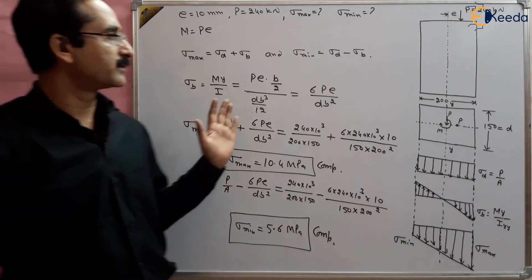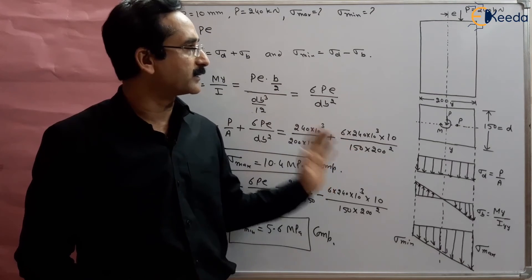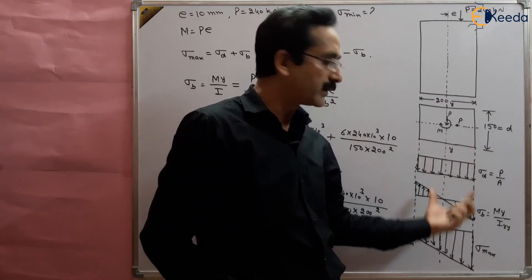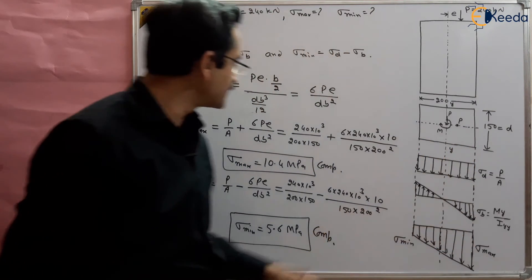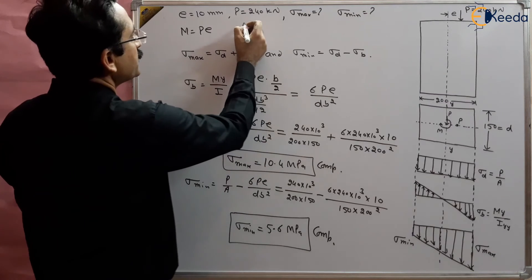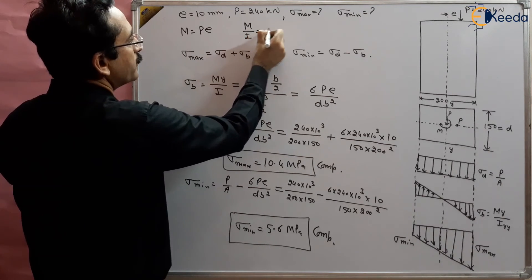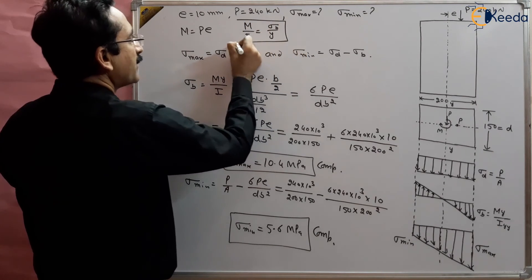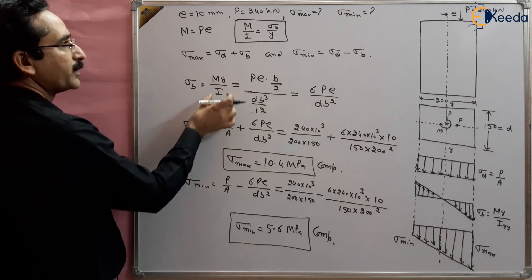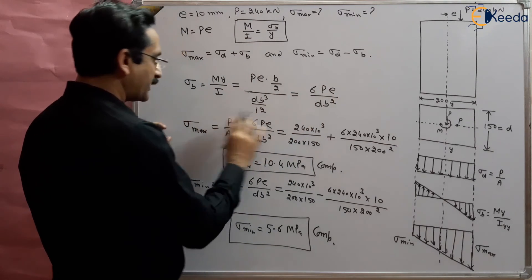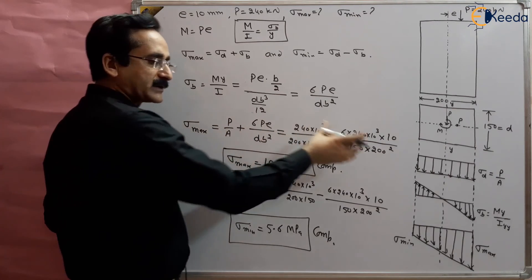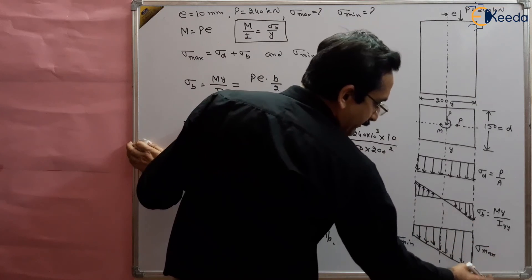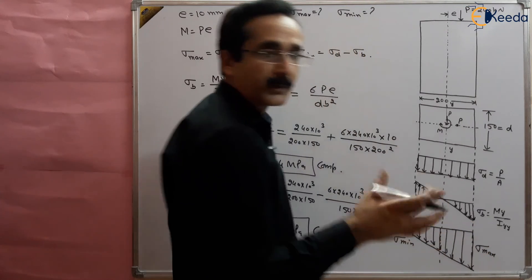This is how the question is solved. Due to eccentricity of the load, both direct stresses and bending stresses are developed and combined. The formula M/I = Sigma/Y was used to find Sigma B = M·Y / I. Adding direct and bending stresses gives maximum stress; subtracting gives minimum stress at the respective outer fibers.